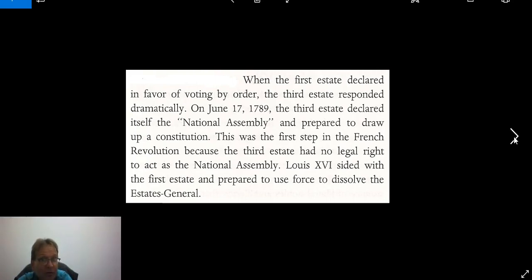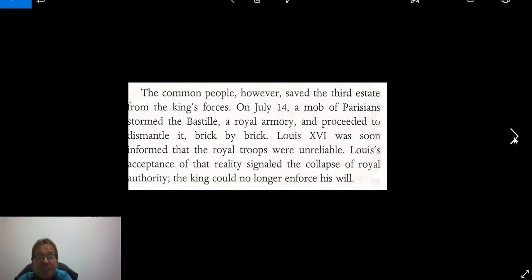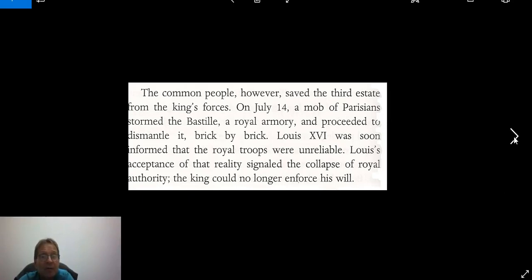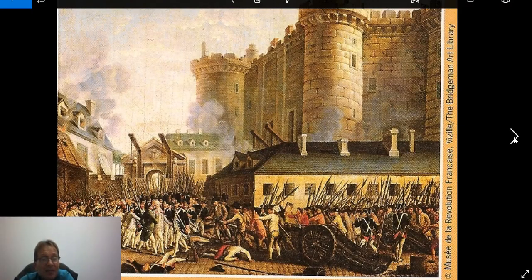Louis XVI sided with the First Estate and prepared to use force to dissolve the Estates General. However, the common people saved the Third Estate — on July 14, 1789, a mob of Parisians stormed the Bastille, the royal armory, and proceeded to dismantle it brick by brick. Louis XVI was soon informed that the royal troops were unreliable. His acceptance of that reality signaled the collapse of royal authority. This is a symbolic representation of the storming of the Bastille.